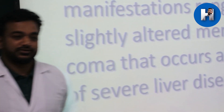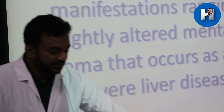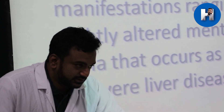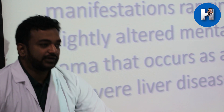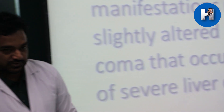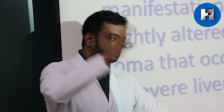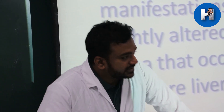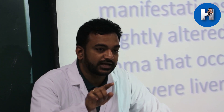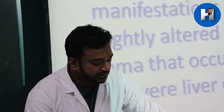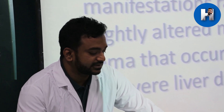Hepatic encephalopathy is a potentially reversible neurologic condition. Multiple mechanisms are involved - toxins, amino acid imbalance, and neurotransmitter imbalance - all suppressing your brain. Because these mechanisms are suppressors rather than destructors, if you treat the patient on time, you can revert it. That's why it is called a potentially reversible neuropsychiatric syndrome.